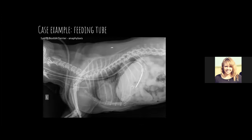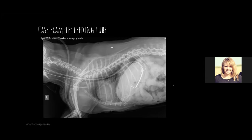One more example to drive home the need for multiple views: a one-year-old female spayed Boston terrier had a severe allergic reaction — anaphylaxis — and a feeding tube was placed. It appeared to lie within the trachea and then extend into the stomach on one view. Without orthogonal views, the radiologist said it was in the stomach and approved feeding. This tube was actually within the lungs, and the patient was accidentally fed food into the lungs. This drives home the point that for patient safety, we need multiple views to truly answer questions.